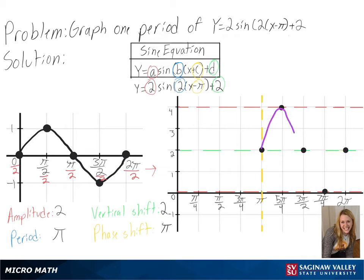And with that, we have graphed one period of y equals 2 sine of 2 times x minus pi plus 2.